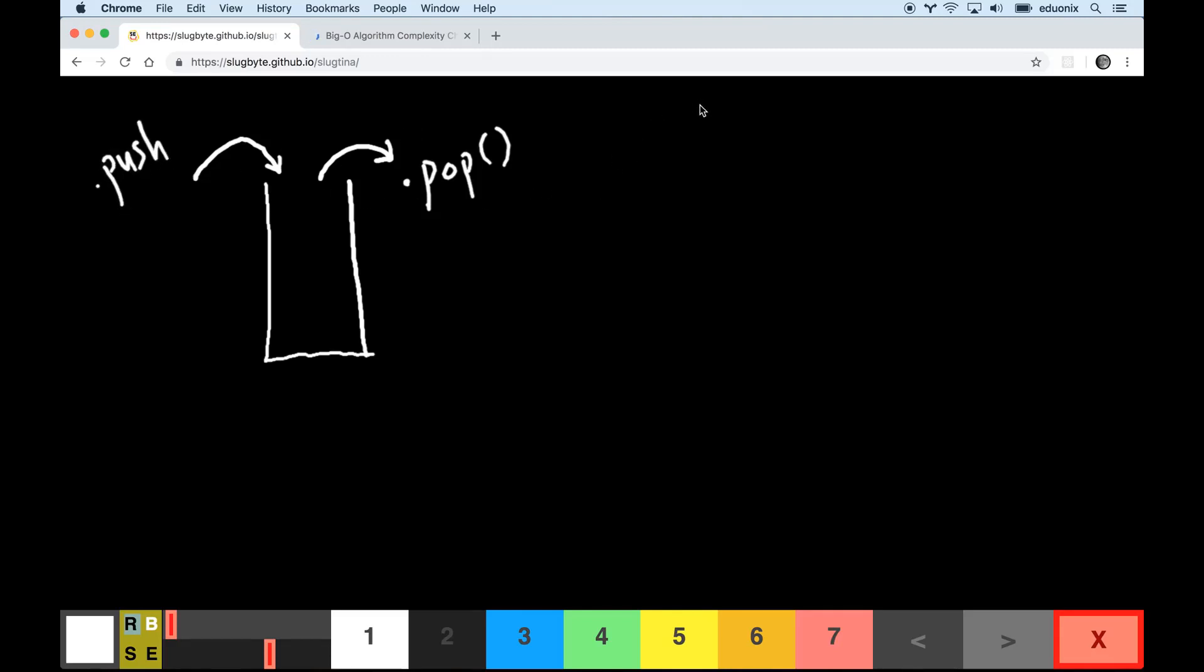Now if you're familiar with JavaScript arrays, you've probably seen these things before: push and pop. What push does is it effectively adds something to the end of an array. And what pop does is it takes the last thing off the end of the array.